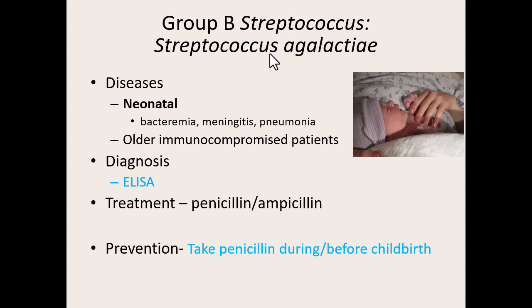To test for it, they'll swab a pregnant woman and can do an ELISA test looking for the antigens of this bacteria. It's super treatable — they'll just give the mother some type of antibiotic shortly before childbirth, such as penicillin or ampicillin. It will get rid of the bacteria before childbirth, and then there are no issues whatsoever passing it on to an infant.